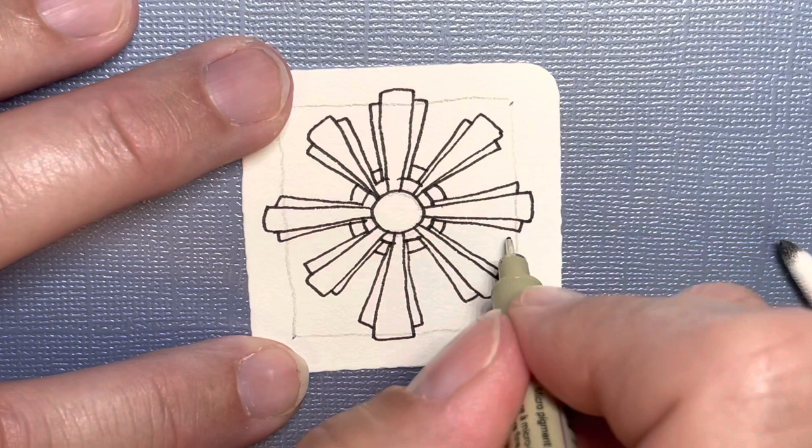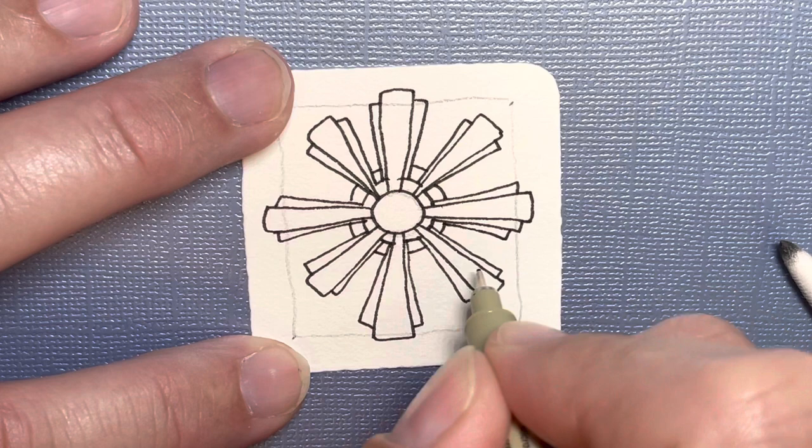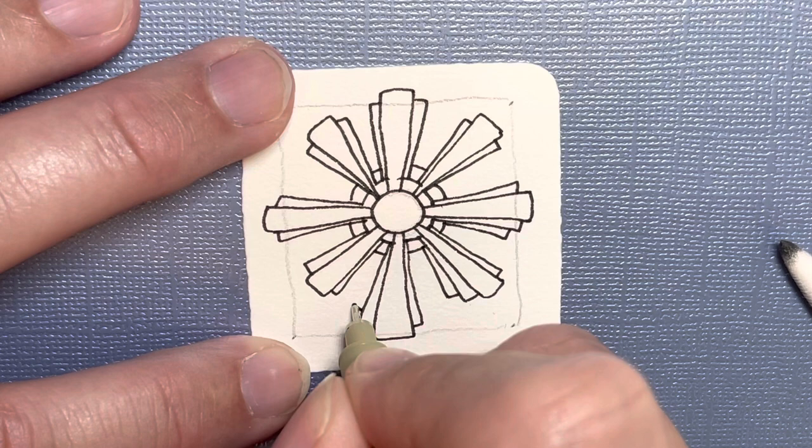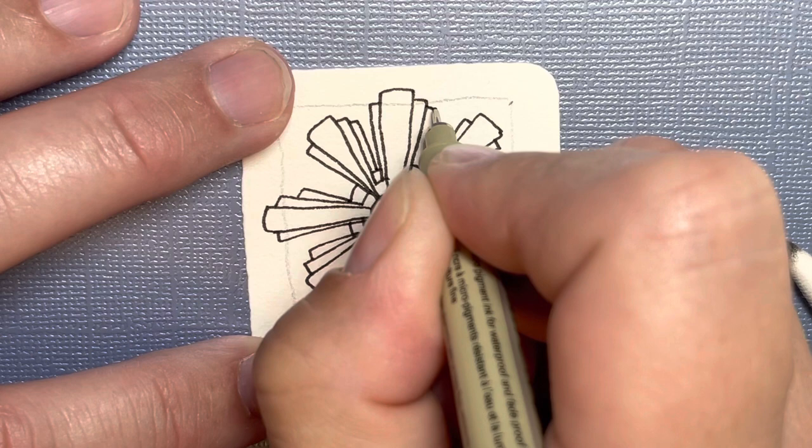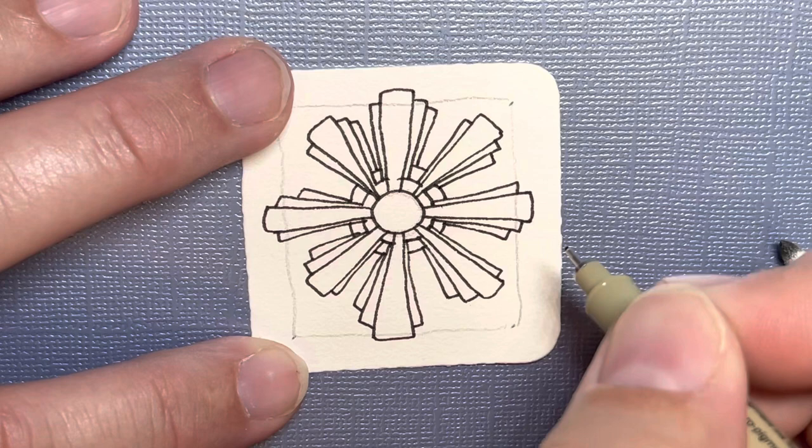And now I go back and I repeat that seven on the right-hand side of each shape. And I'm going down a little bit more to make it a little bit shorter.